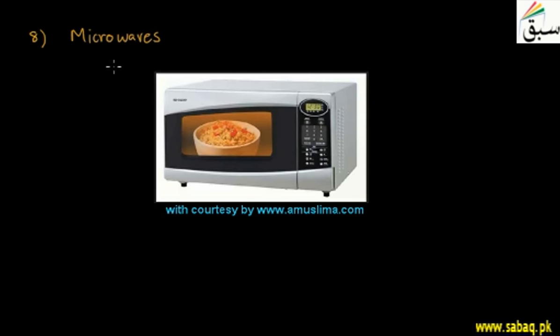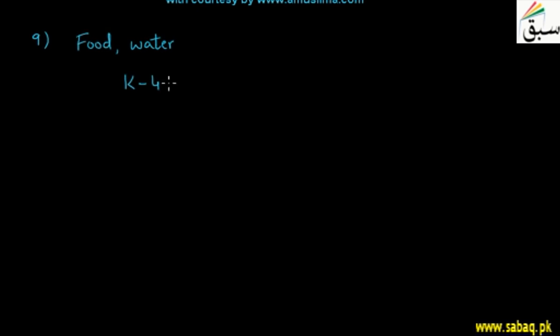The ninth source comes from food or water, in which a few radioactive elements are mixed. For example, potassium-40 — denoted by its symbol with atomic mass 40 — and carbon-14. These are radioactive elements, and when food or water containing them enter our body, they produce beta radiation, which is very important to understand.